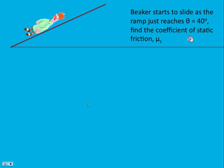What we're looking at is the condition just before beaker started to slide. So maybe it's 39.999999 degrees, but we'll get the same result if we put in the angle at which we first started to notice him move. And so 40 degrees is our theta slide, if you will.